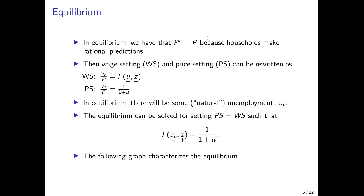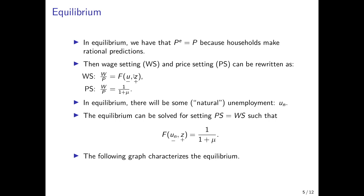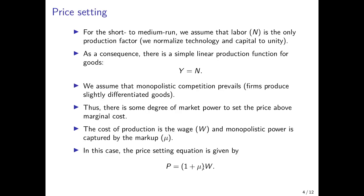So now we have two equations: a wage-setting equation and a price-setting equation. If we assume that after the short run, prices adjust such that they match price expectations and households make rational predictions, we can use the two equations to solve for the labor market equilibrium by bringing the price level to the left-hand side in both equations. Dividing the wage-setting equation by P, we get the real wage as the function F of U and Z. For the price-setting equation, bringing W to the left-hand side and taking the inverse gives the real wage as 1 over 1 plus mu.